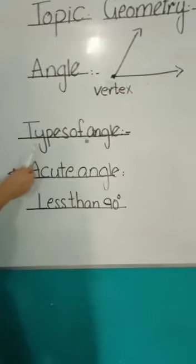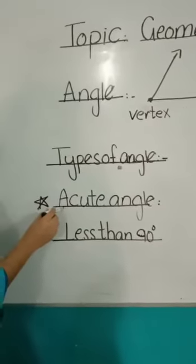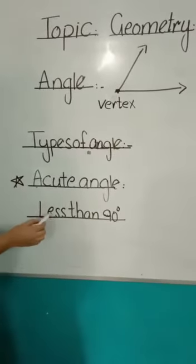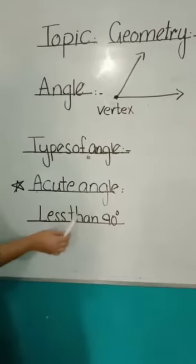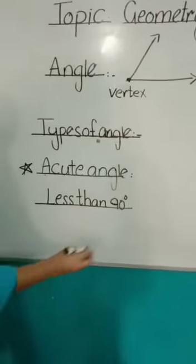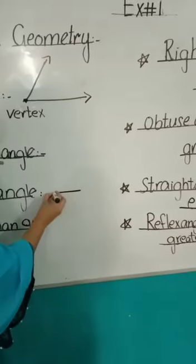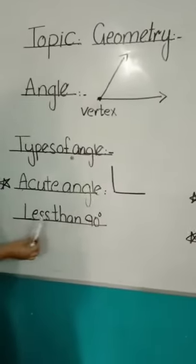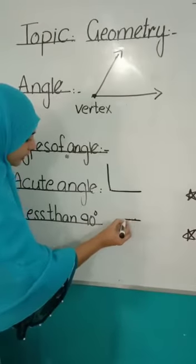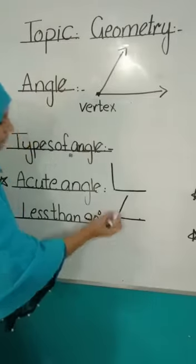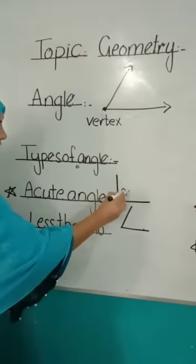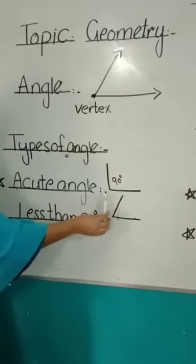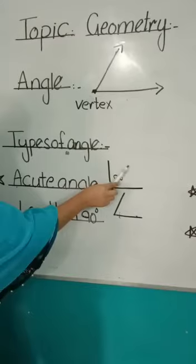The types of angle — here we learn about the types of angle. First of all, acute angle. What is acute angle? Acute angle is the angle which is less than 90 degrees. This one is the 90 degree angle, but acute angle is less than 90 degrees.